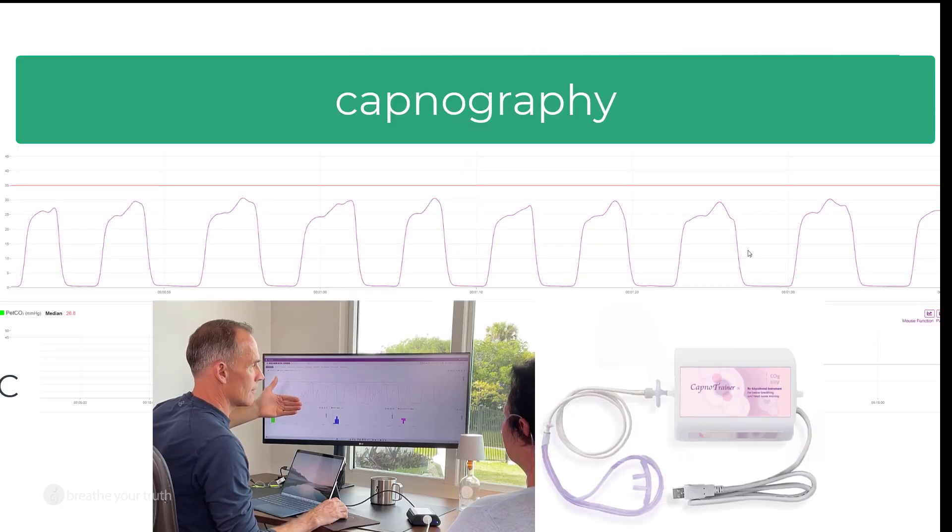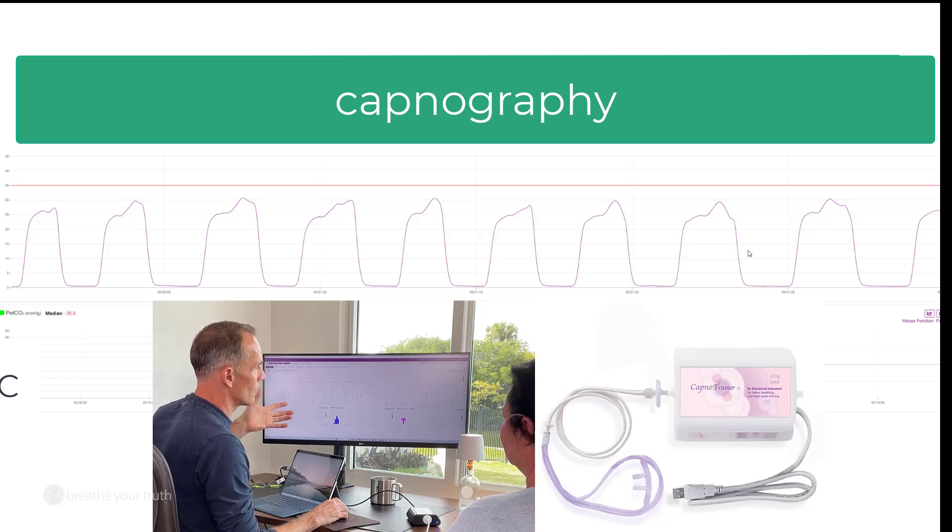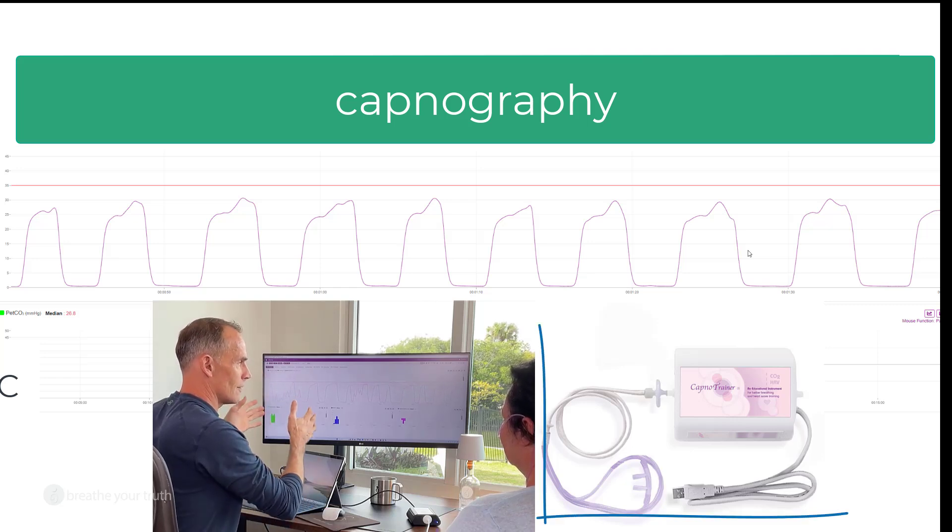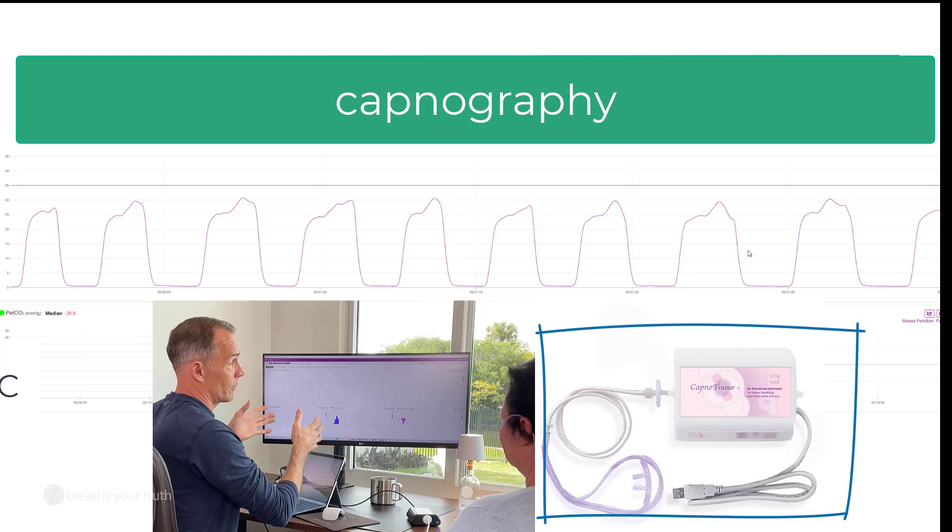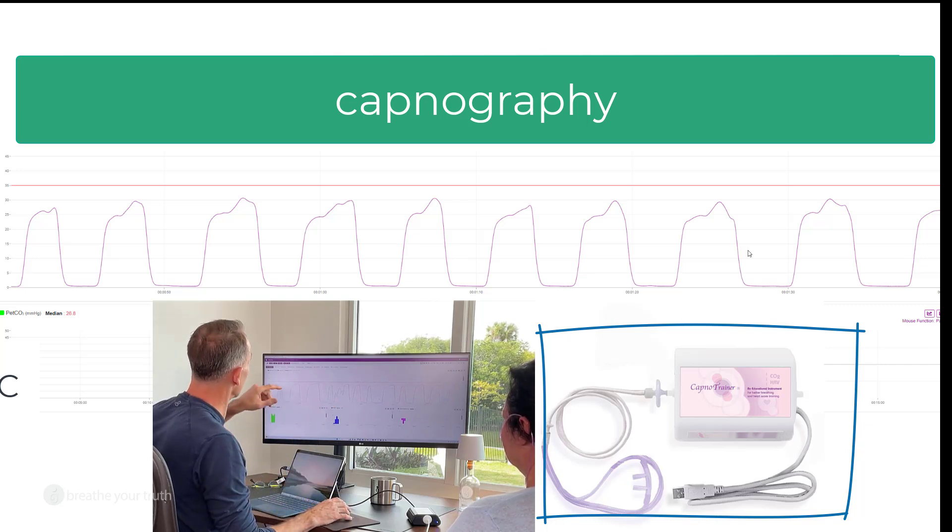There's some technology that we use when we work with people individually called capnography. The specific device is called a capnotrainer, and this lets us see exactly what's happening with the CO2 level so that we can look at a breath practice and give it a thumbs up or realize that's not really doing anything, or maybe it's even making carbon dioxide worse. So it takes the guesswork out of this idea of improving the biochemical aspect of breathing.